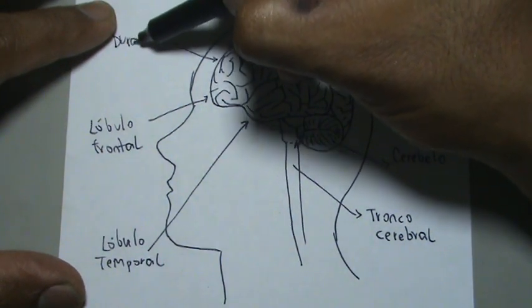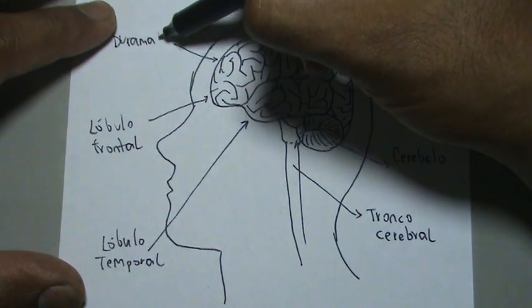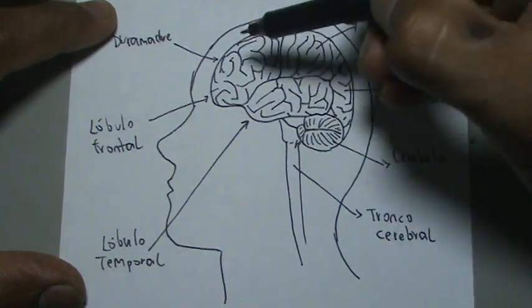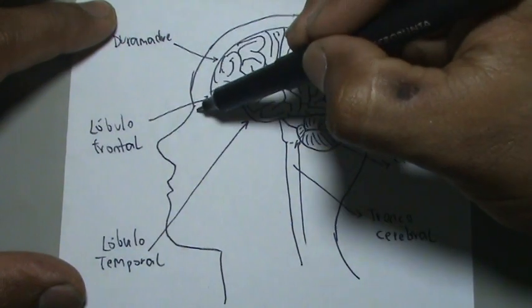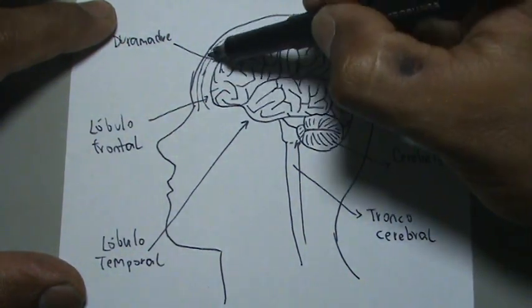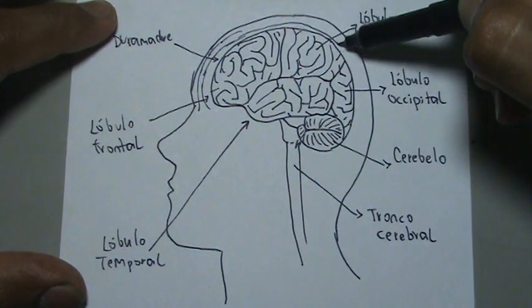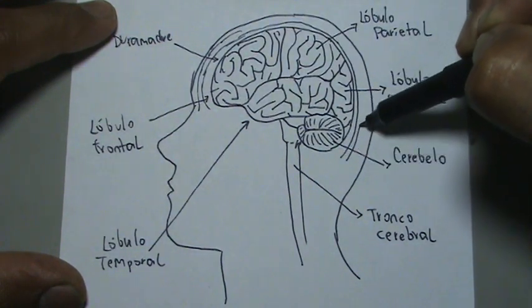Esto aquí se llama dura madre, esta parte de aquí dura madre. Vamos a dibujar el cráneo, el cráneo es el hueso que va por aquí, el hueso del cráneo que rodea el cerebro.